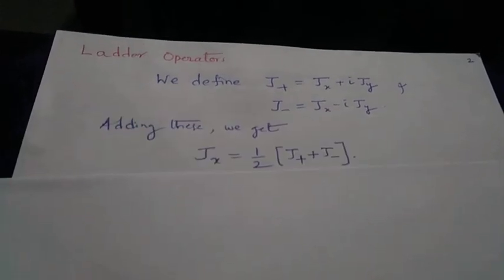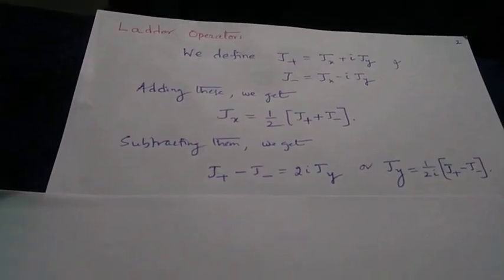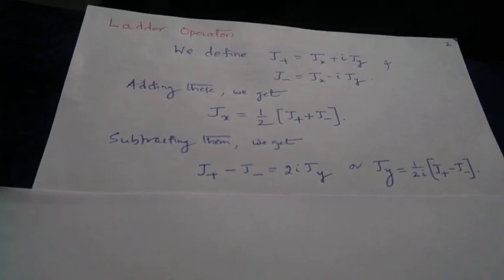To find the values of α and β, we define the ladder operators: J+ equals Jx plus i*Jy, called the raising operator, and J− equals Jx minus i*Jy, called the lowering operator. Adding these gives Jx as (1/2)(J+ + J−), and subtracting gives Jy as (1/2i)(J+ − J−).